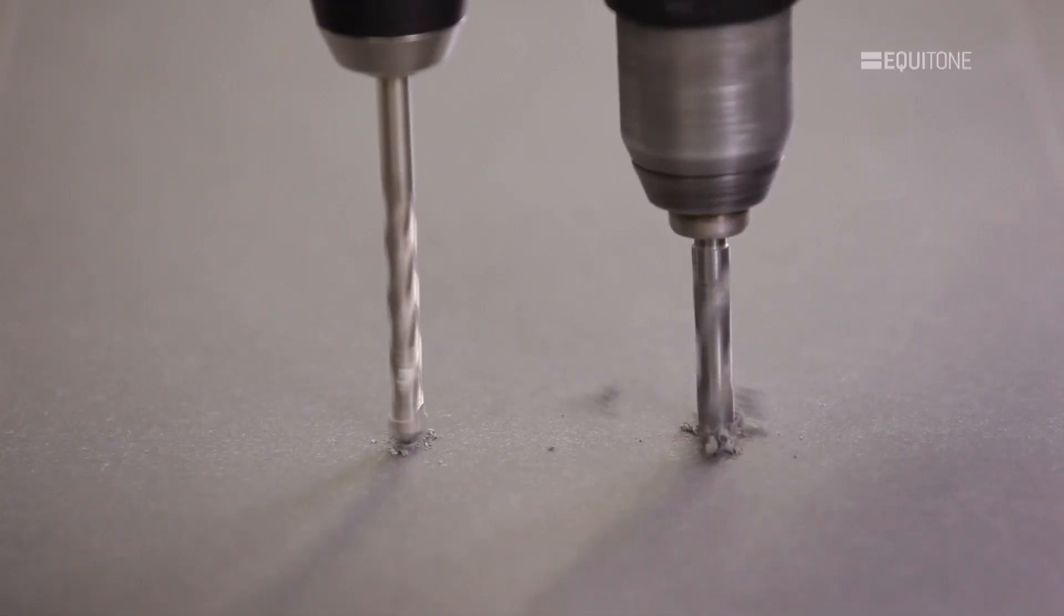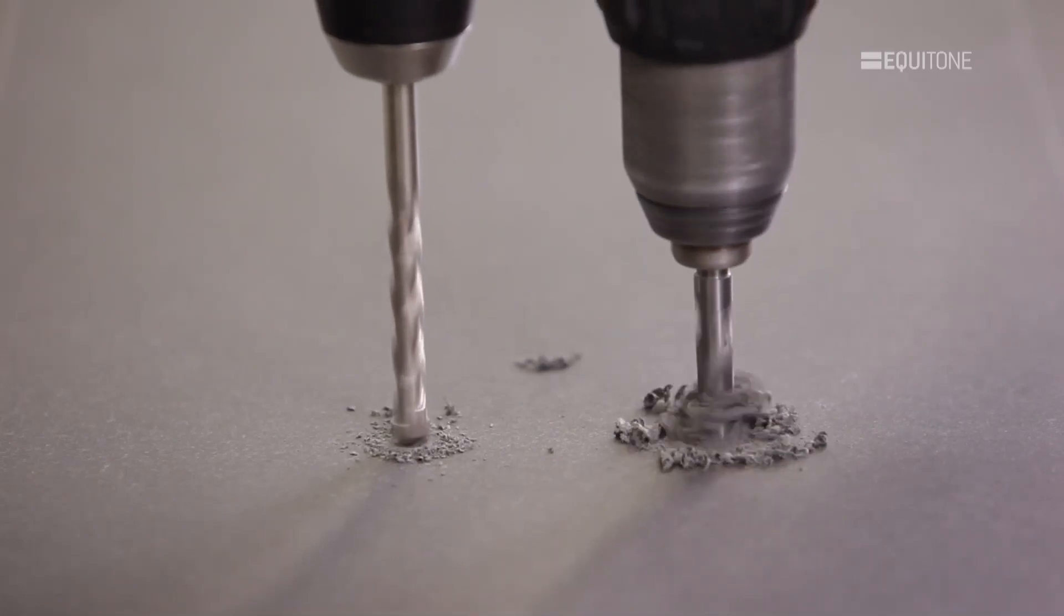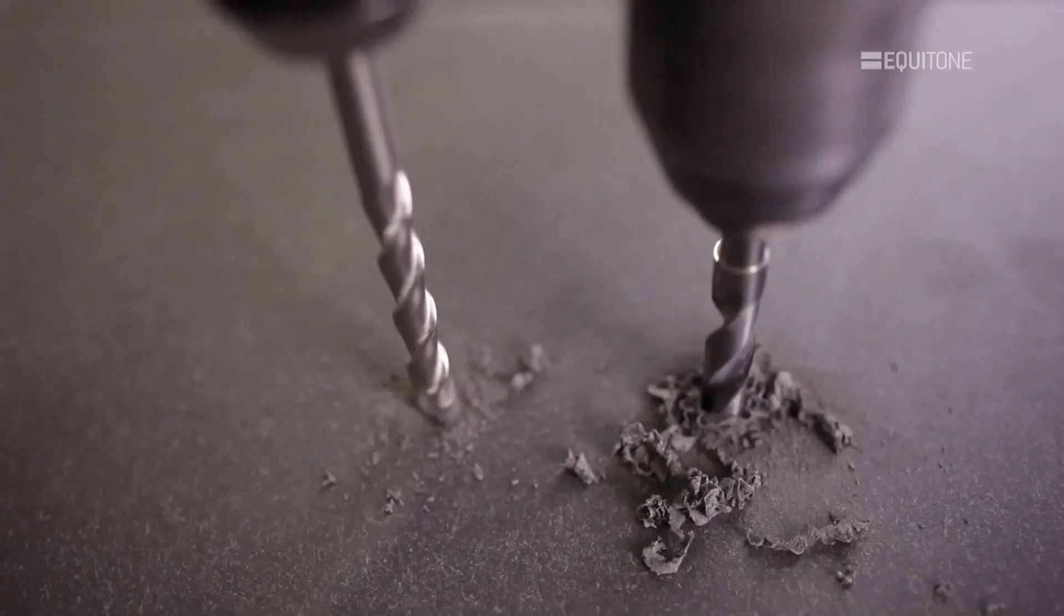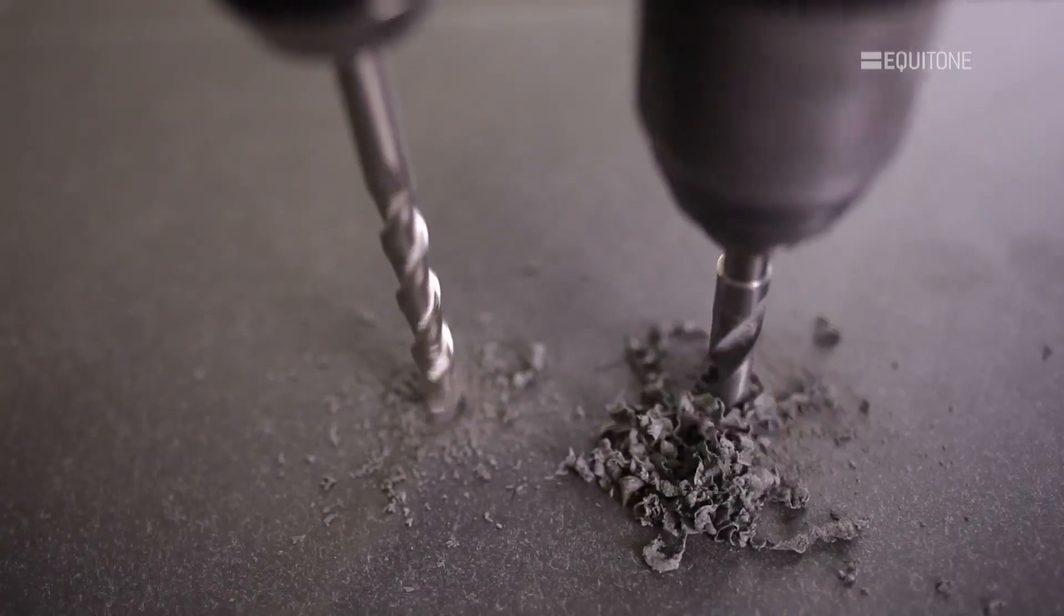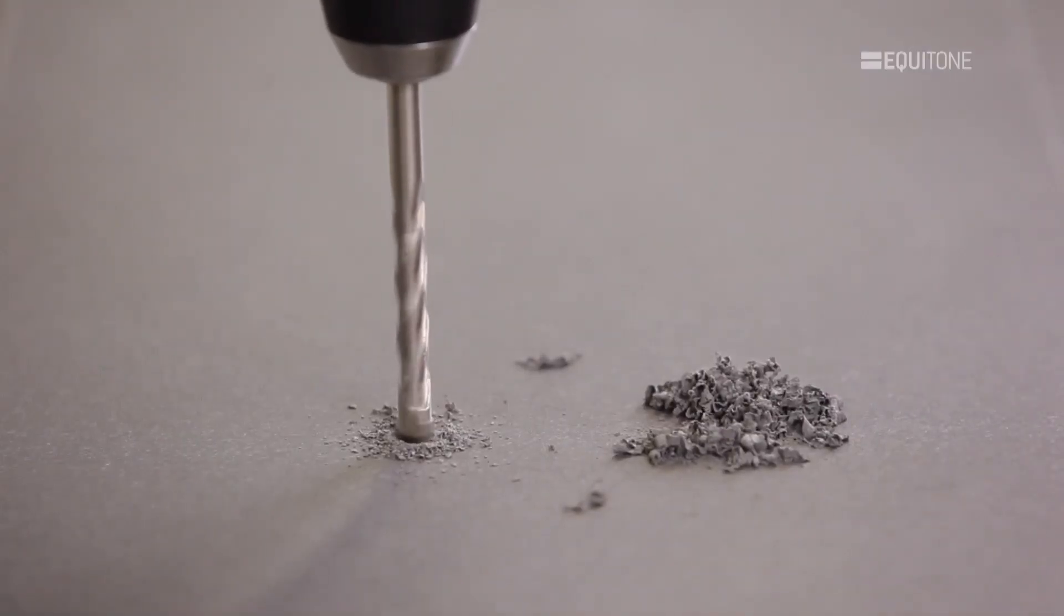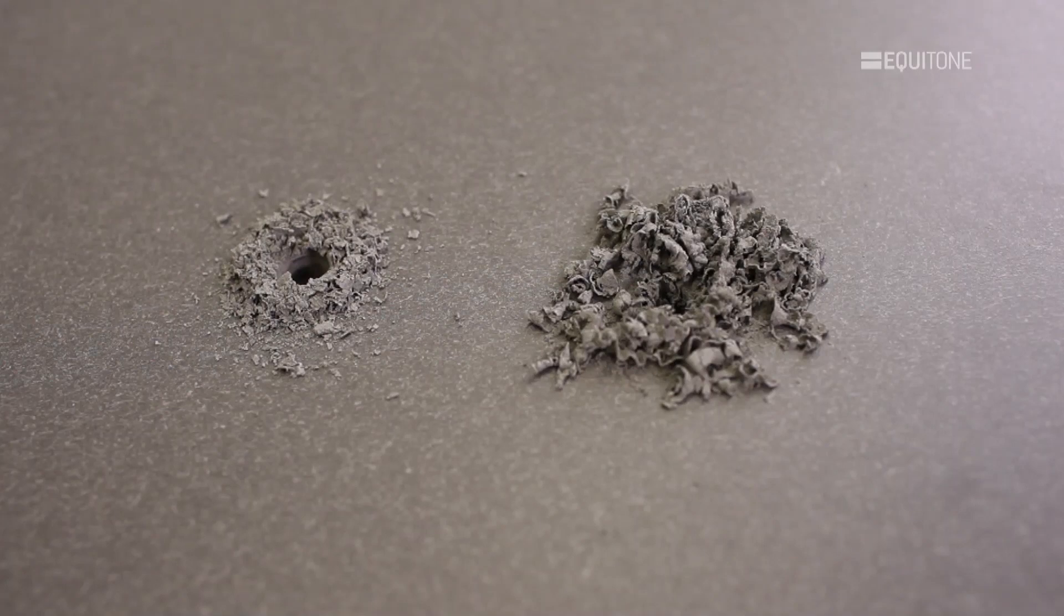Here it is clear to see the differences between a standard masonry bit and the Equitone drill bit. The Equitone drill bit is faster. Using a standard masonry drill bit results in a fine dust, burning of the fibre cement and an oval hole.